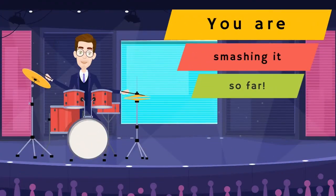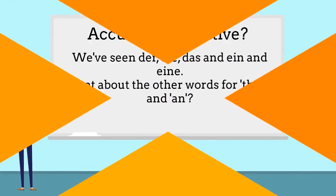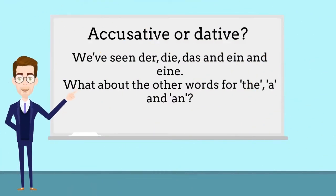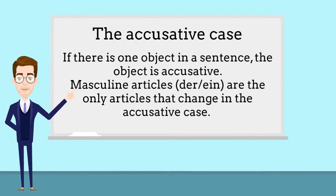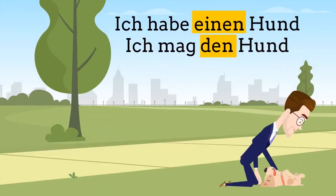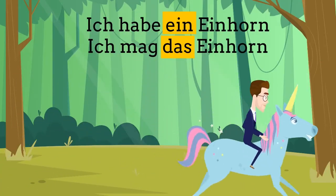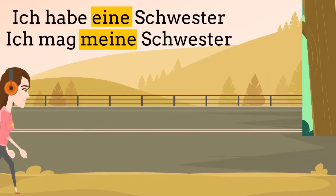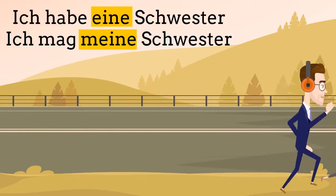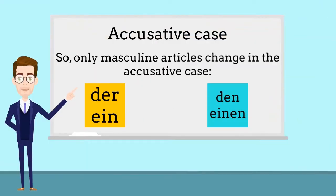You are smashing it! We've looked at der, die, das, ein and eine. Now we're going to look at some other words for 'the' and 'a/an'. In a German sentence with one object and no preposition, it's usually going to be the accusative case. In the accusative case, only the masculine article changes. Ich habe einen Hund; ich mag den Hund. Ich habe ein Einhorn; ich mag das Einhorn. Ich habe eine Schwester; ich mag meine Schwester. So only masculine articles change: der becomes den, ein becomes einen.